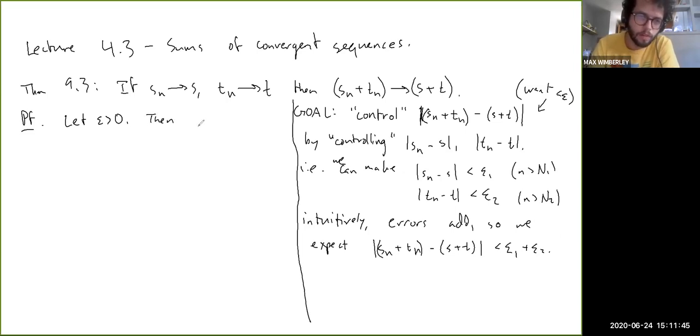So then, there exists an N1 such that, I don't even really have to label epsilon 1, I can just say there exists an N1 because Sn converges, there exists an N1 such that |Sn minus S| is less than epsilon over 2 for all n greater than N1. And then, similarly, there exists an N2 such that |Tn minus T| is less than epsilon over 2 for all n greater than N2.